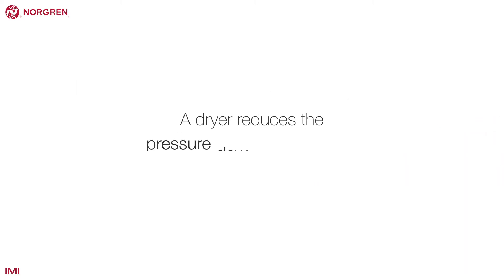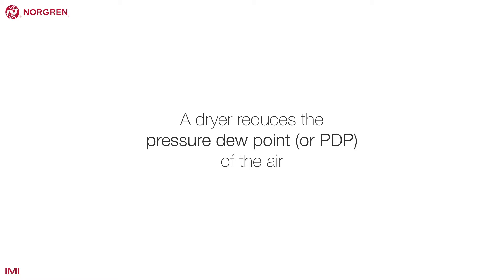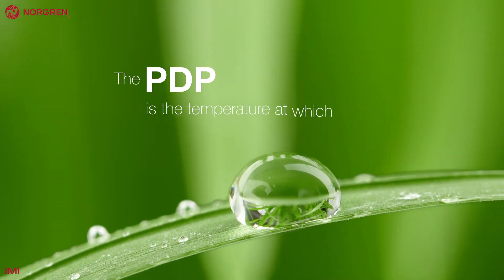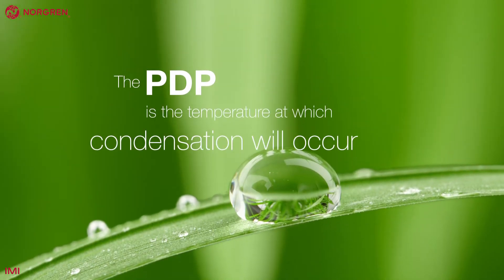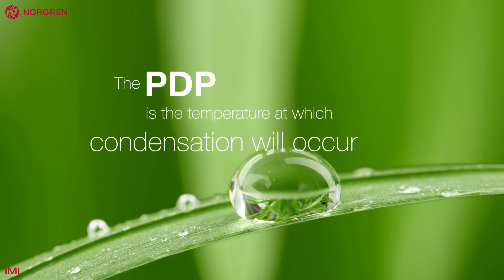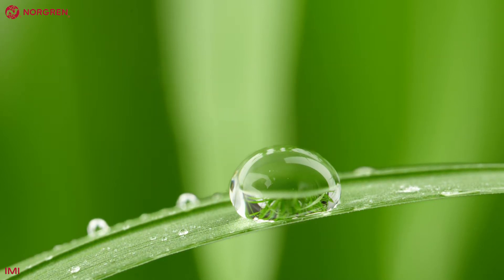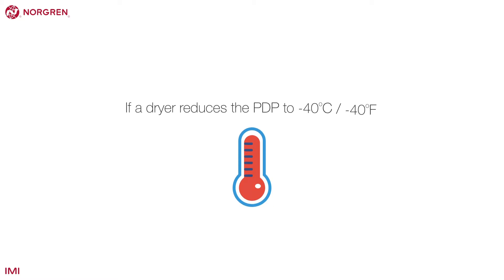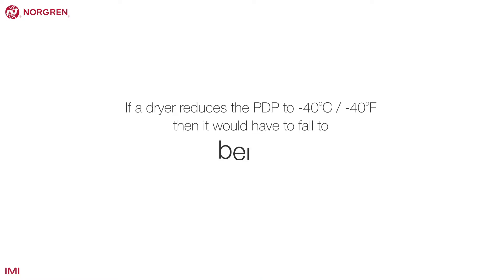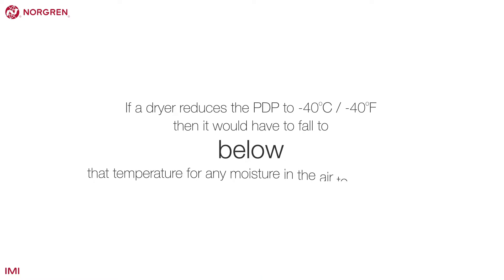A dryer reduces the pressure dew point, or PDP, of the air. The PDP is the temperature at which condensation will start to occur — it's the point at which the air can no longer hold all the moisture within it. If a dryer reduces the PDP to minus 40 degrees Celsius or minus 40 degrees Fahrenheit, then it would have to fall below that temperature for any remaining moisture in the air to condense to liquid.